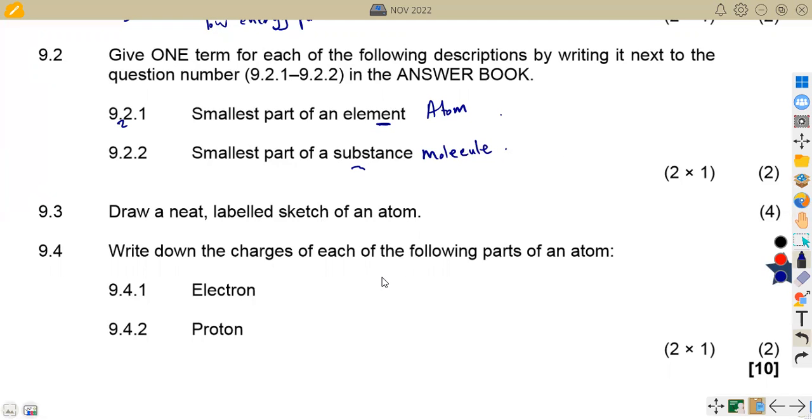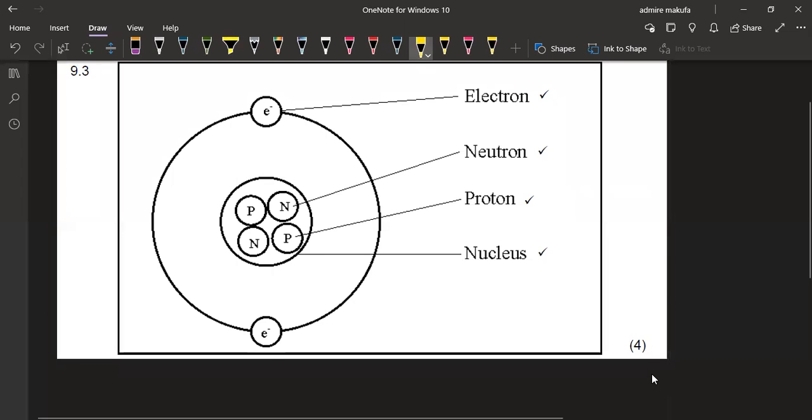9.3, draw a neat labeled sketch of an atom. I'm going to show you a sketch of an atom with everything listed. So this is what we have at the outer shell. That is where we have the electrons here. Then inside, we've got the neutron and the proton. Remember our nucleus. So we've got the nucleus. It consists of the proton and the neutron. That's our nucleus, which is this shell here.